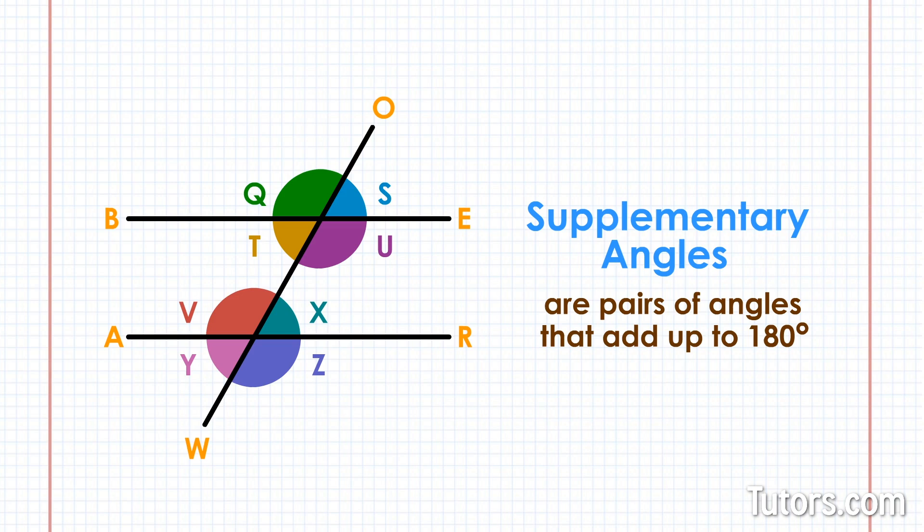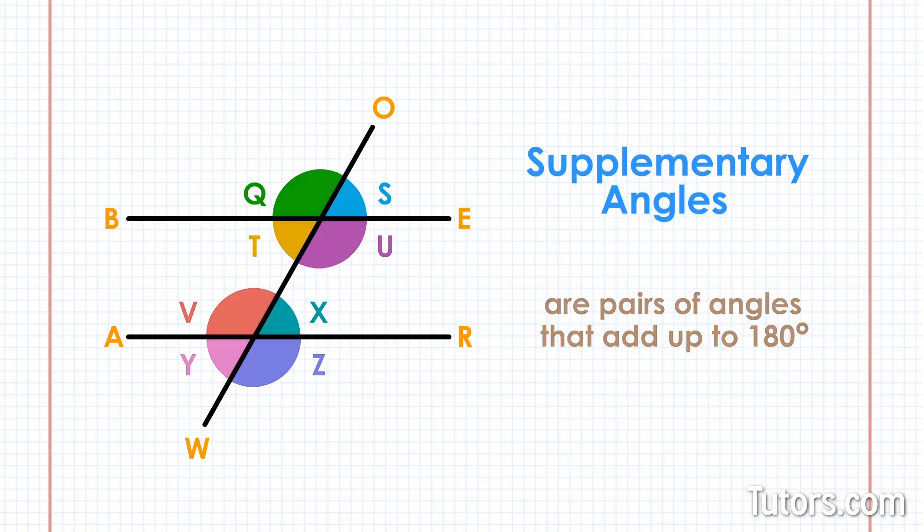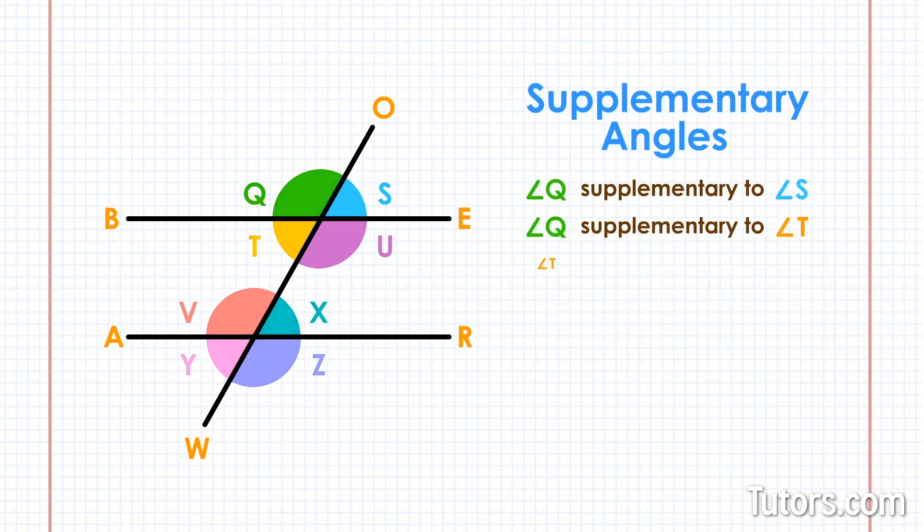Supplementary angles are not limited to just transversals. In this example, the supplementary angles are QS, QT, TU, SU, and VX, VY, YZ, and XZ. Here are all the other pairs of supplementary angles.